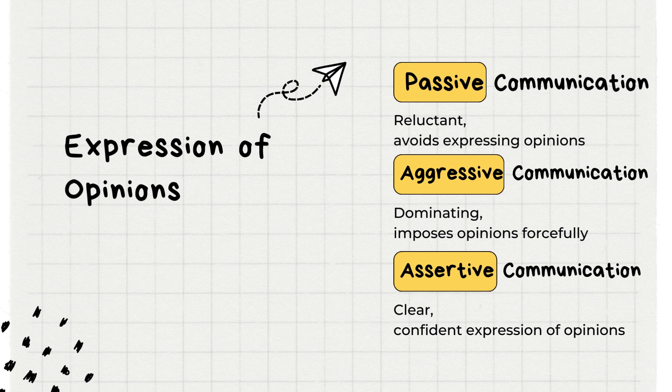Now, let's observe the difference among these three styles of communication in various aspects. Expression of Opinions — Passive Communication: individuals tend to be reluctant and avoid expressing their opinions, often stemming from a fear of conflict or a desire to please others, even at the expense of suppressing their own viewpoints. Aggressive Communication: aggressive communicators dominate conversations, imposing their opinions forcefully, creating an atmosphere of intimidation where others feel reluctant to express their views. Assertive Communication: assertive communicators express opinions clearly and confidently without dominating, encouraging open dialogue and the respectful exchange of ideas.